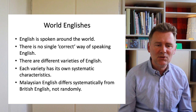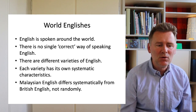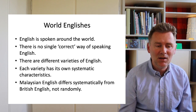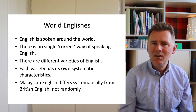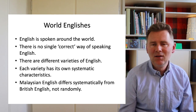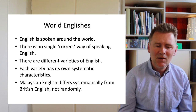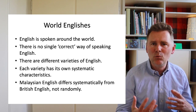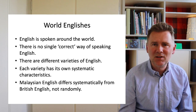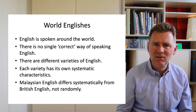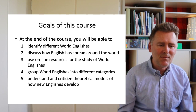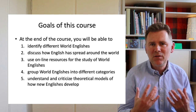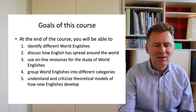This brings me to the topic of world Englishes in general. English is spoken around the world, and the point I wanted to make with this initial example is that there is no single correct way of speaking English. There are different varieties of English and each variety has its own systematic characteristics. Malaysian English differs systematically from British English — not randomly. It's not that every speaker of Malaysian English has their own way of twisting the rules of standard British English; rather, there is a conventionalized system of rules that all speakers of Malaysian English share.